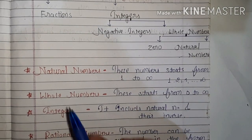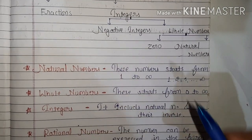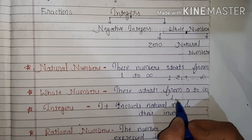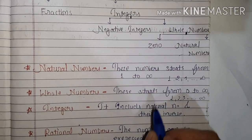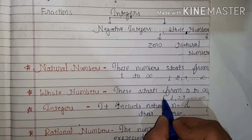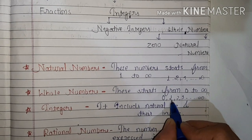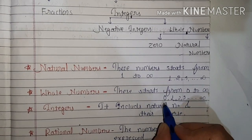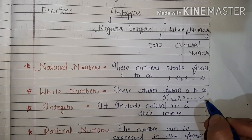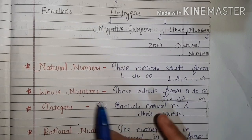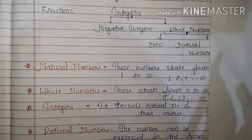What are whole numbers? These numbers are made by one, two, three till infinity, but they also include zero. So whole numbers go from zero to infinity — they contain the natural number set plus zero.